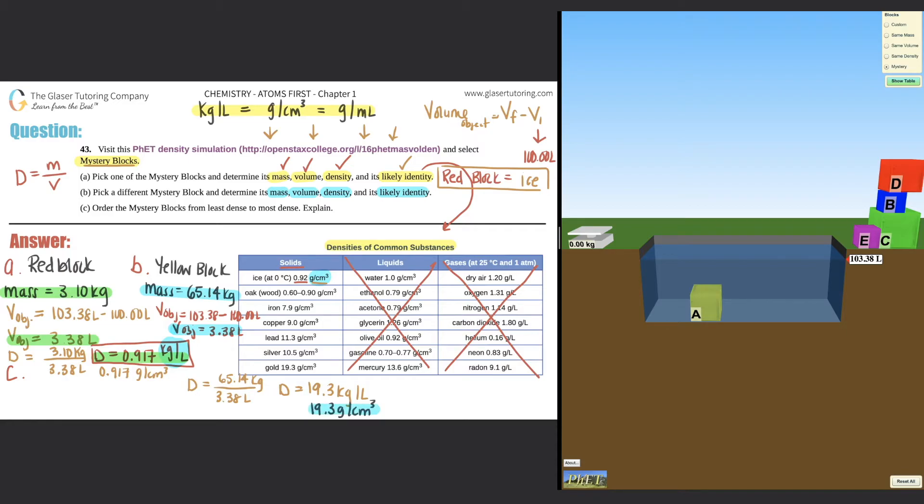And now we just have to give the likely identity. Well, it's still a block. So I'm going to still look in the solids category. Let's see. 19.3. Oh, all the way down here. This is super dense. So this identity of the yellow block is probably gold. So there you go with that one. So that's the end of all these mass, volume, density, likely identity. So these two are done.